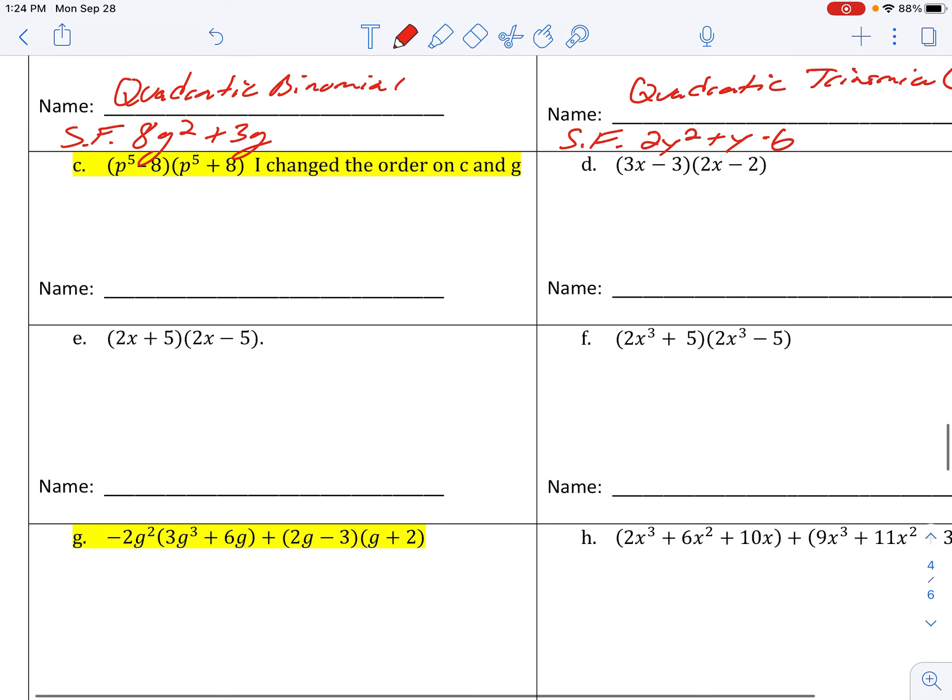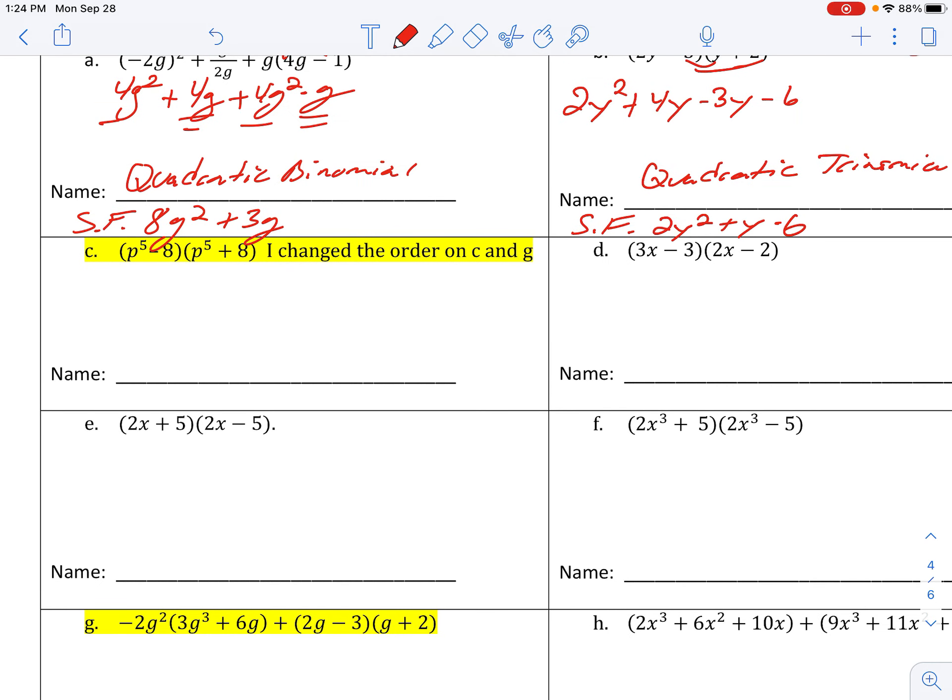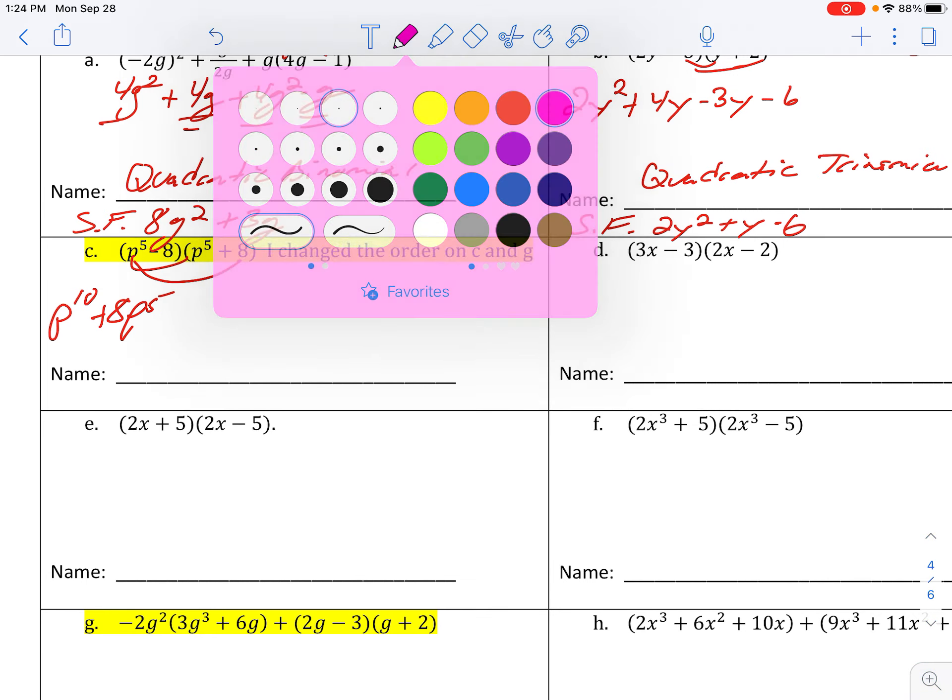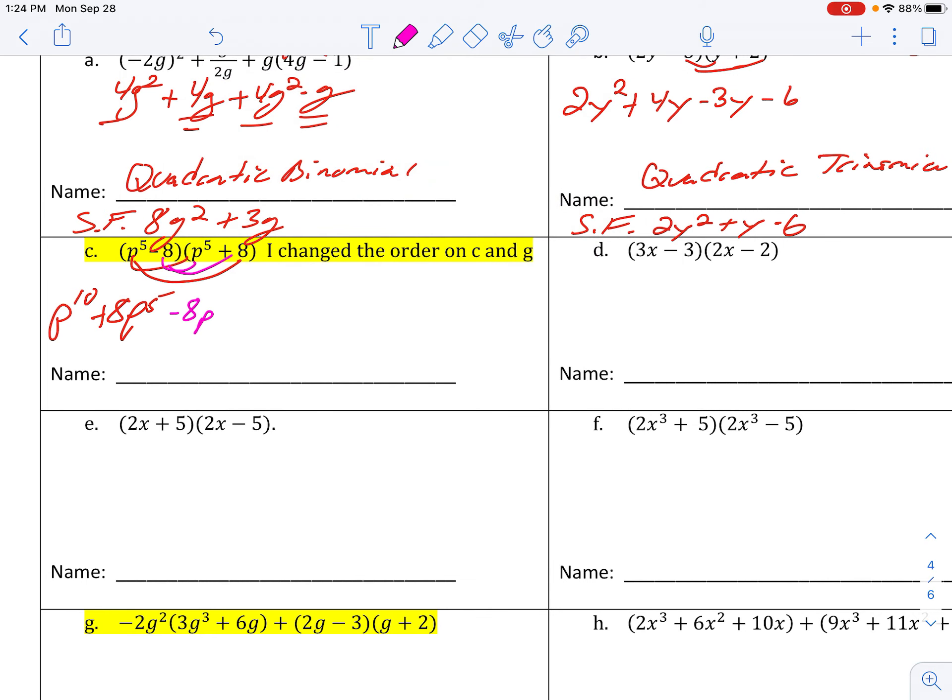Okay. So let's just go ahead and I change the order of C and G. Okay. Let's just go ahead and distribute. P to the fifth times P to the fifth. P to the fifth times 8. Now we distribute the negative 8. Negative 8P to the fifth minus 64. Combine like terms to put in standard form. P to the tenth. And what happens right here? 8P to the fifth minus 8P to the fifth. They cancel out. So they are gone. So we end up with P to the tenth minus 64. This is a tenth degree binomial.